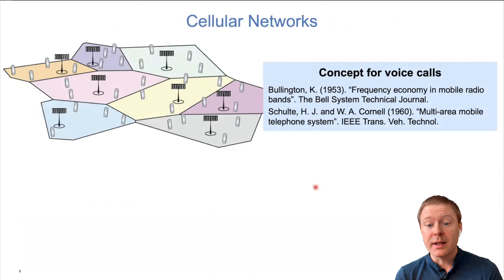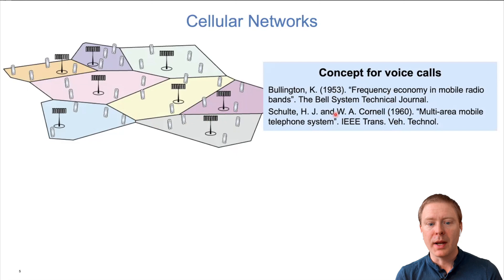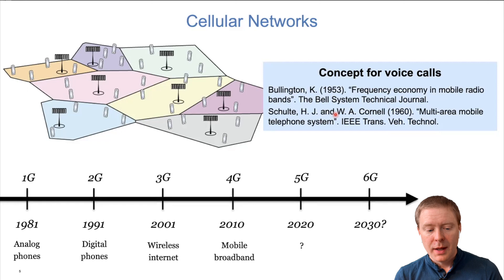Cellular networks are what we mainly utilize today for wide-area coverage. The idea of wireless networks based on dividing the world into different areas and placing a base station on rooftops or towers goes all the way back to the 1950s and 60s. People at Bell Labs were already thinking about how to deliver wireless telephone services by dividing a city into regions and reusing the same frequencies multiple times.